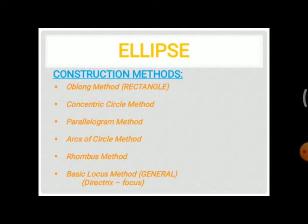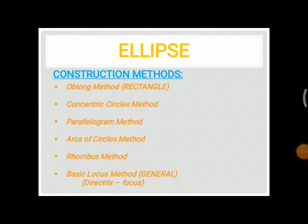The third method is the parallelogram method, where the ellipse is constructed within a parallelogram — its construction is similar to the oblong method. The fourth is the arcs of circles method, the fifth is the rhombus method, and the sixth is the basic locus method, also called the general method, which is constructed using a directrix and focus, making it somewhat different from all the above methods.